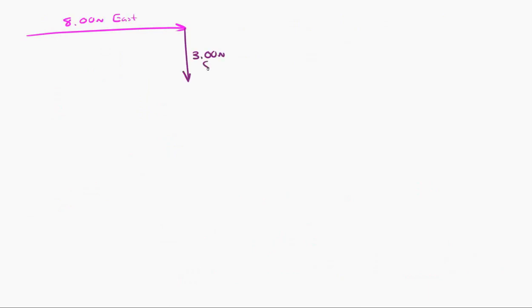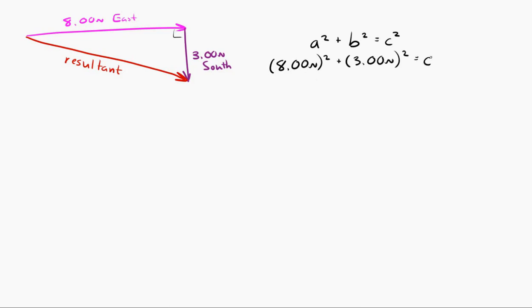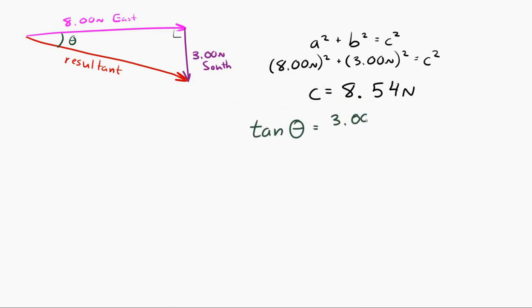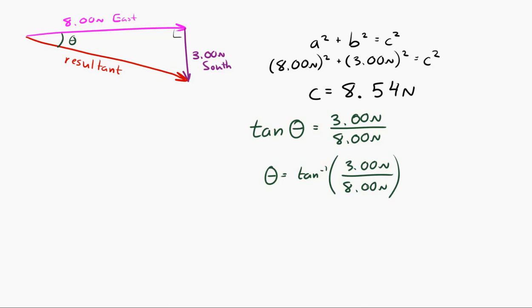Let's look at another example. Let's say I have two vectors I want to add together: 8 Newtons east plus 3 Newtons south. I'll draw them tip-to-tail and draw in the resultant going from the first tail to the last tip. It creates a right triangle, so I can use the Pythagorean theorem — a squared plus b squared equals c squared — giving a magnitude of 8.54 Newtons. To indicate direction using an angle at the base of the resultant vector, the tangent of that angle equals 3 Newtons divided by 8 Newtons, so theta equals the inverse tangent of 3 over 8, which equals 20.6 degrees.